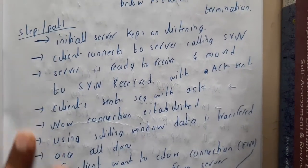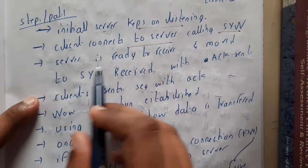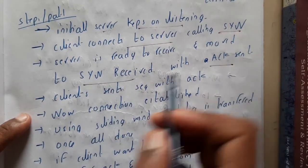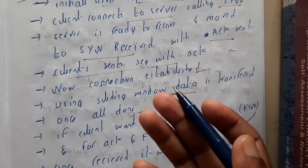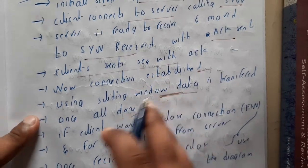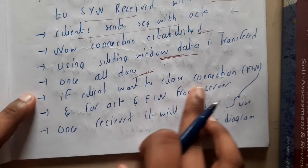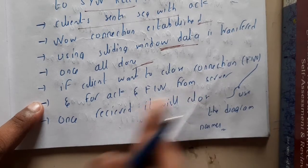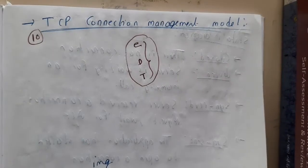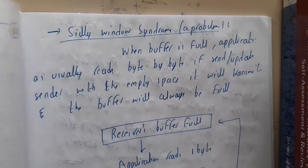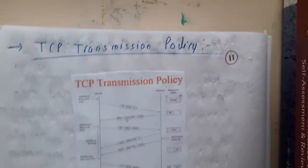To summarize: the server always listens, the client sends SYN, the server moves to SYN RECEIVED, sends acknowledgement, and the client sends the final acknowledgement — connection established. Data transfer uses protocols like sliding window. When done, the client terminates by sending FIN, the server sends FIN with acknowledgement, and the connection is closed. This is all about TCP connection management. In the next lecture we will go through TCP policies.